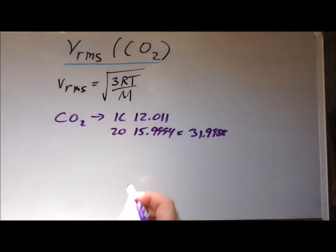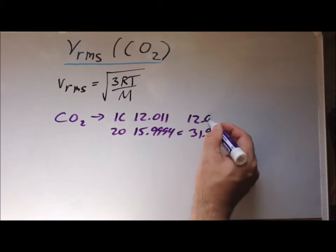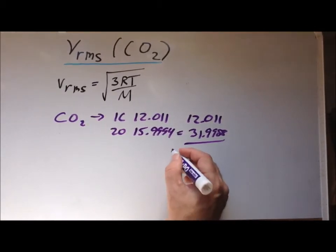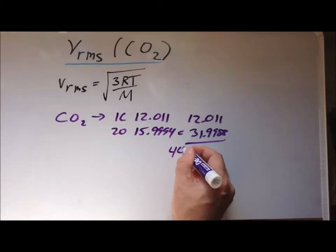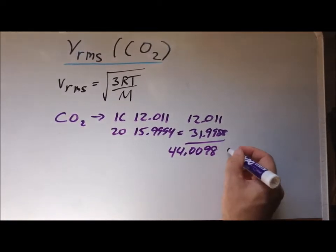We have one carbon atom with a mass of 12.011. And if we add those together, we get a molar mass of 44.0098, and that's grams per mole.